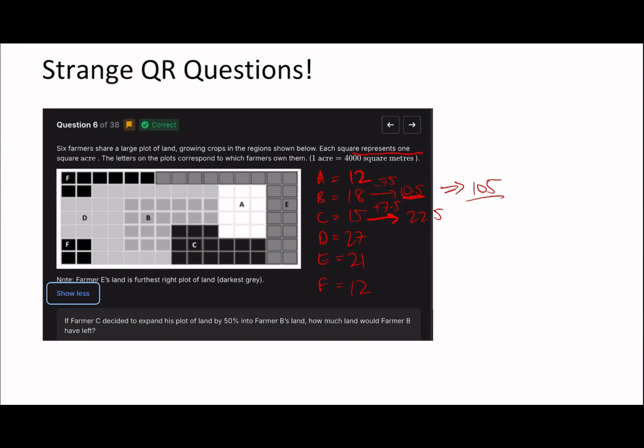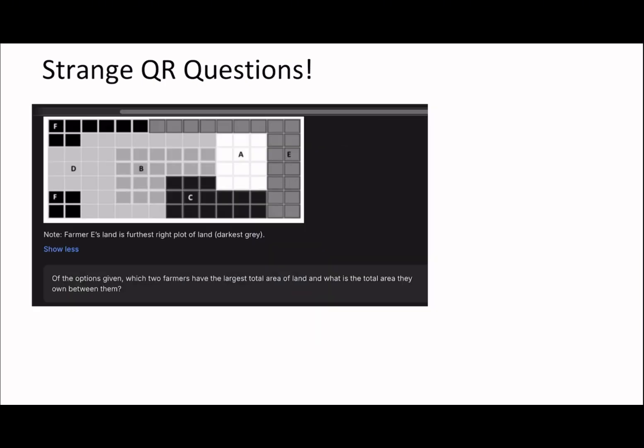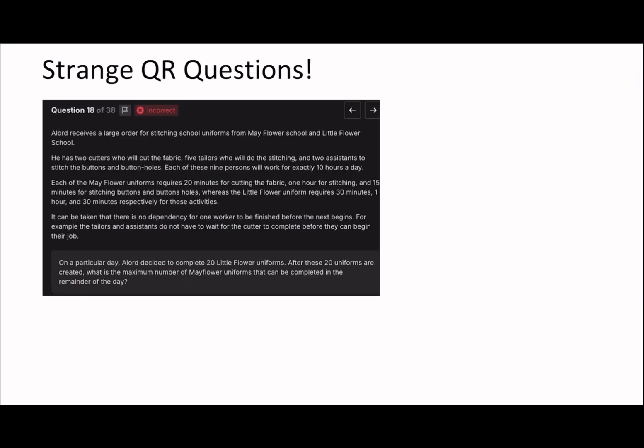The point here is because of the way that it's worded, you could have just done that specific one, but I think it would have been good to do the others as well because it definitely helps especially with later questions. You can see that here on the next question because it says of the options given, which two farmers have the largest total area of land. I'm not going to do this one because I don't think this is necessarily too difficult now. You can see how taking that extra time and effort on the last question definitely will save us a lot of time.